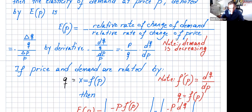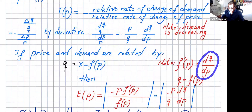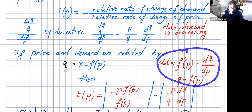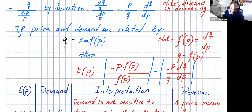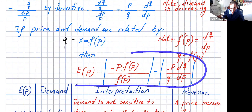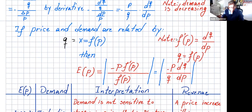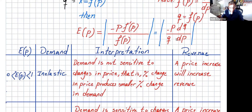The formula for elasticity of demand E(p) is: negative p times f′(p) divided by f(p), or equivalently p over q times dq/dp, taking the absolute value to eliminate the negative sign. Note that q and x are the same thing — the number of items — and different books use different notation. We take absolute value so it's easier to read without the negative sign.